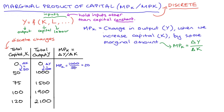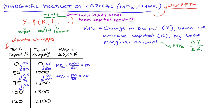As we go from 50 to 75 units of capital, our change in capital is 25. Total output changes from 1000 to 1500, so that's an increase of 500. The marginal product of capital is 500 divided by 25, which equals 20. In the next change, going from 75 to 100 units of capital, output goes from 1500 to 1900 — an increase of 400 — so the marginal product of capital is 400 divided by 25, which equals 16.